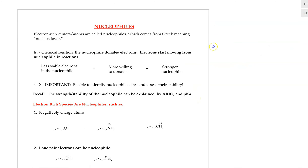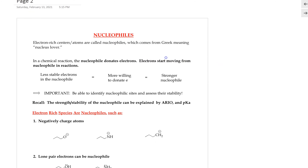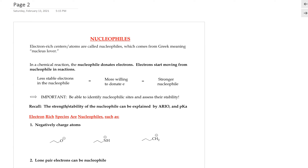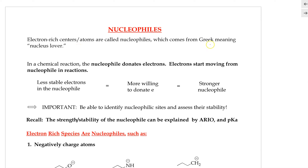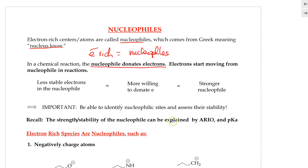Now let's define the nucleophile and the electrophile. Nucleophiles are basically an electron-rich center or atom. The term nucleophile means "nuclear lover" — they love electrons because they are electron-rich. In a chemical reaction, the nucleophile donates electrons, so electrons start moving from the nucleophile.